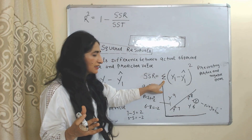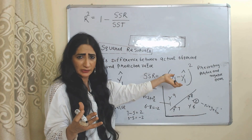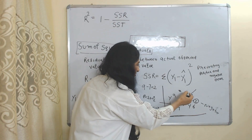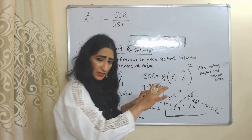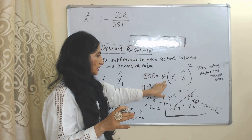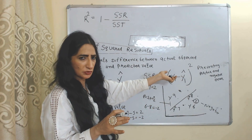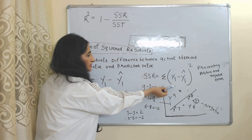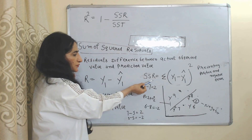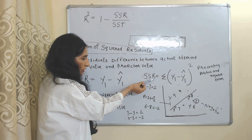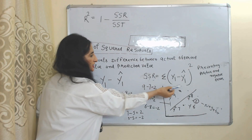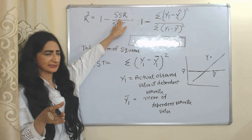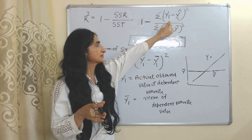But why do we add the summation? Why do we compute the sum of squared residuals? Because we have so many residuals — some here, some there. That's why we take the summation. So SSR equals the summation of the square of (Y1 minus Y1-hat).